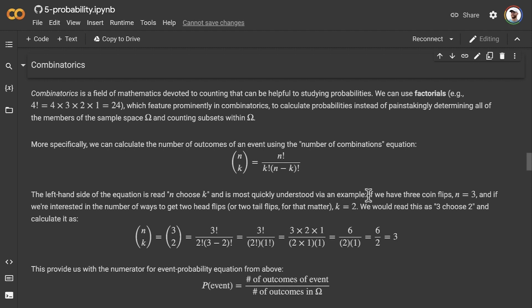If we have three coin flips, then n is equal to 3. Our total number of coin flips in our event is 3. And if we're interested in the number of ways that we can get two head flips, or two tail flips for that matter, then k is equal to 2. So we would read this situation as three choose two. n is equal to 3, our total number of coin flips. k is equal to 2, our number where we get two specific outcomes, let's say two head flips. We read that as three choose two.